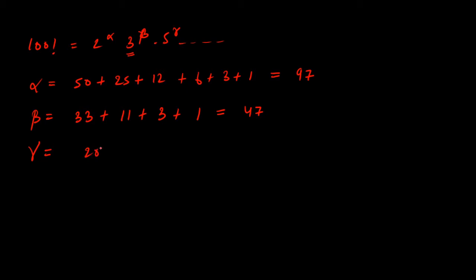Similarly, calculate gamma, the maximum power of 5. Divide 100 by 5: you get 20. Divide 20 by 5: you get 4. Divide 4 by 5: this becomes a fraction and the greatest integer function of a fraction is 0. So gamma equals 20 + 4 = 24.